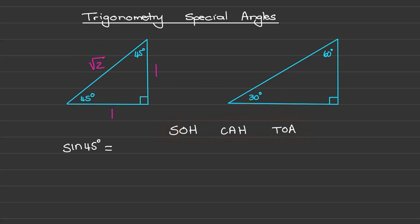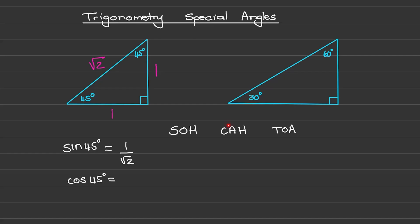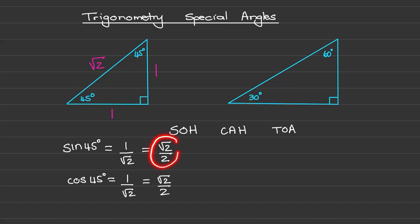For the sine ratio I have the length of the opposite divided by the length of the hypotenuse. So from 45 degrees the opposite length is one and the length of the hypotenuse is square root of two, so the sine of 45 is one over square root of two. For cosine I use the length of the adjacent side divided by the length of the hypotenuse, so the cosine of 45 degrees is one over square root of two. The sine of 45 and the cos of 45 are both the same.